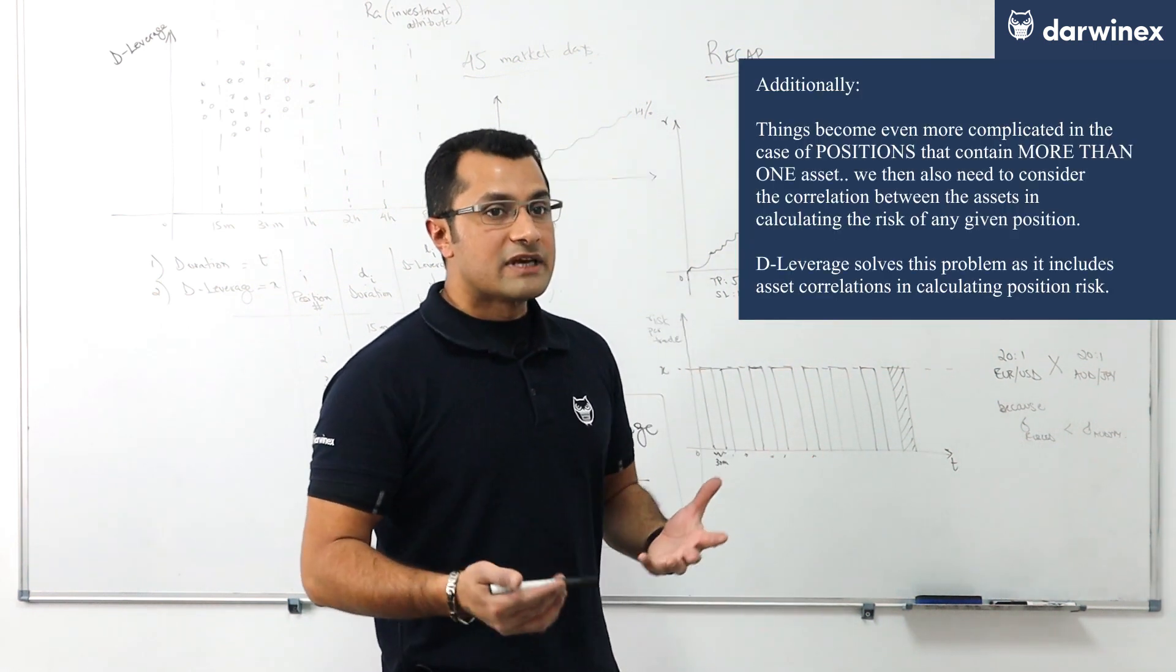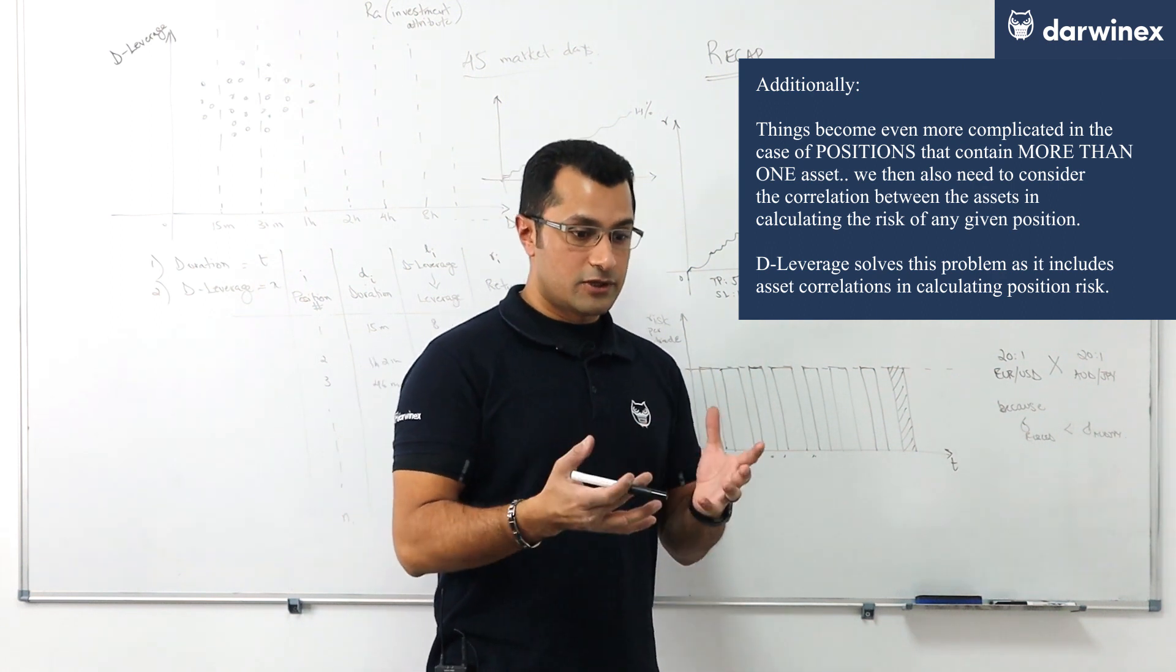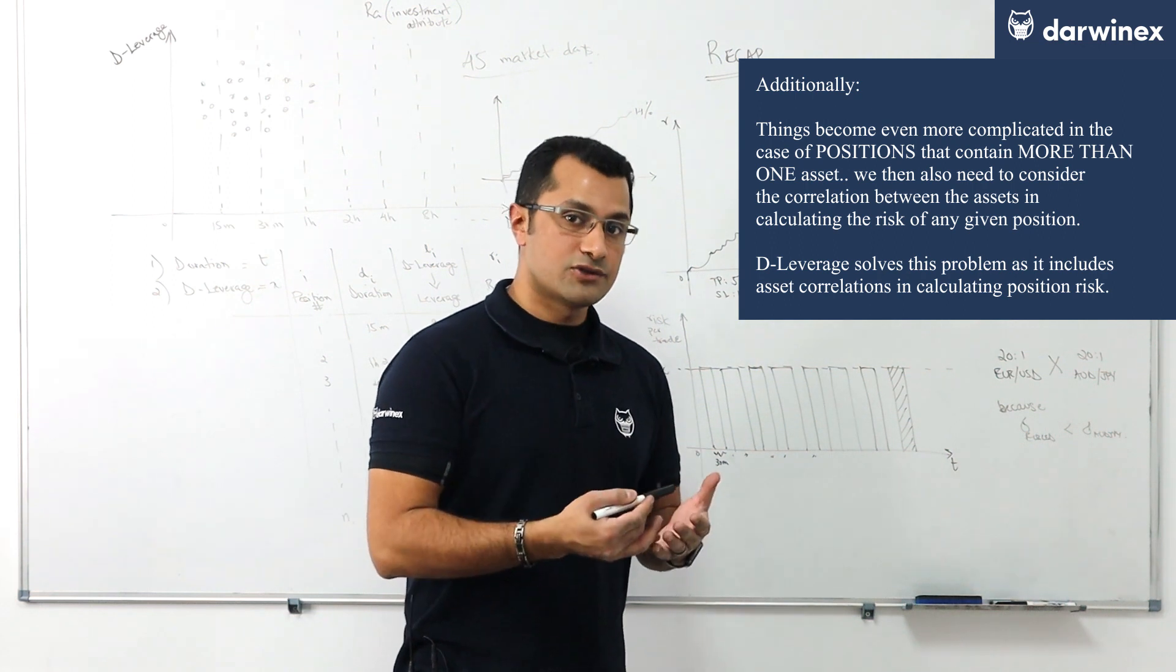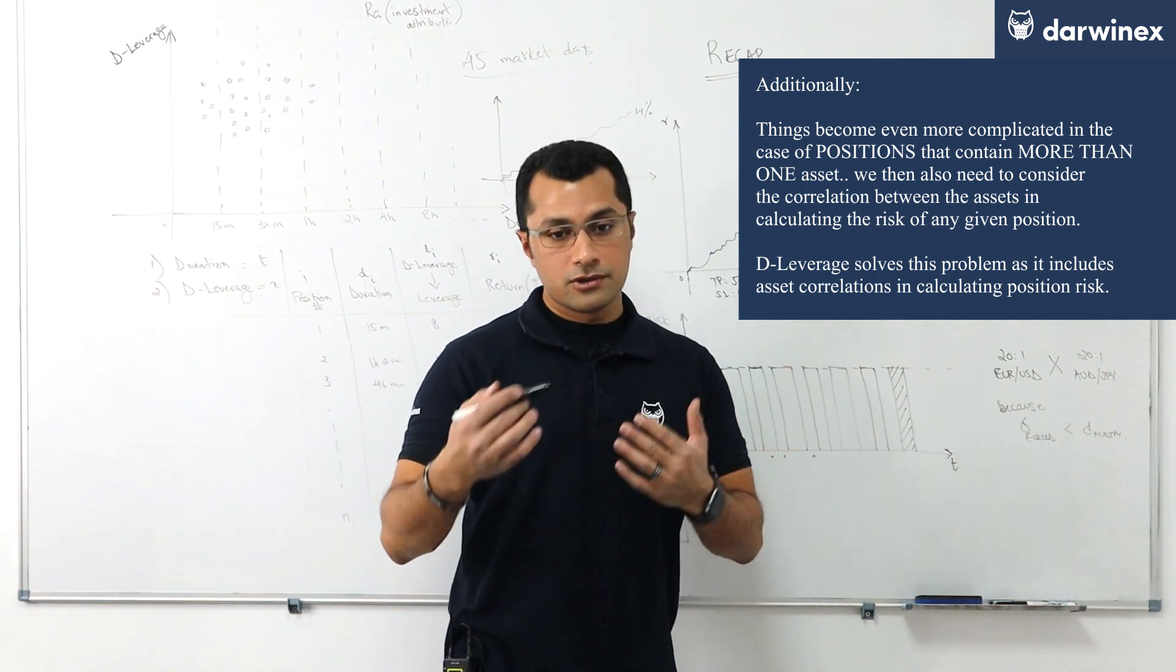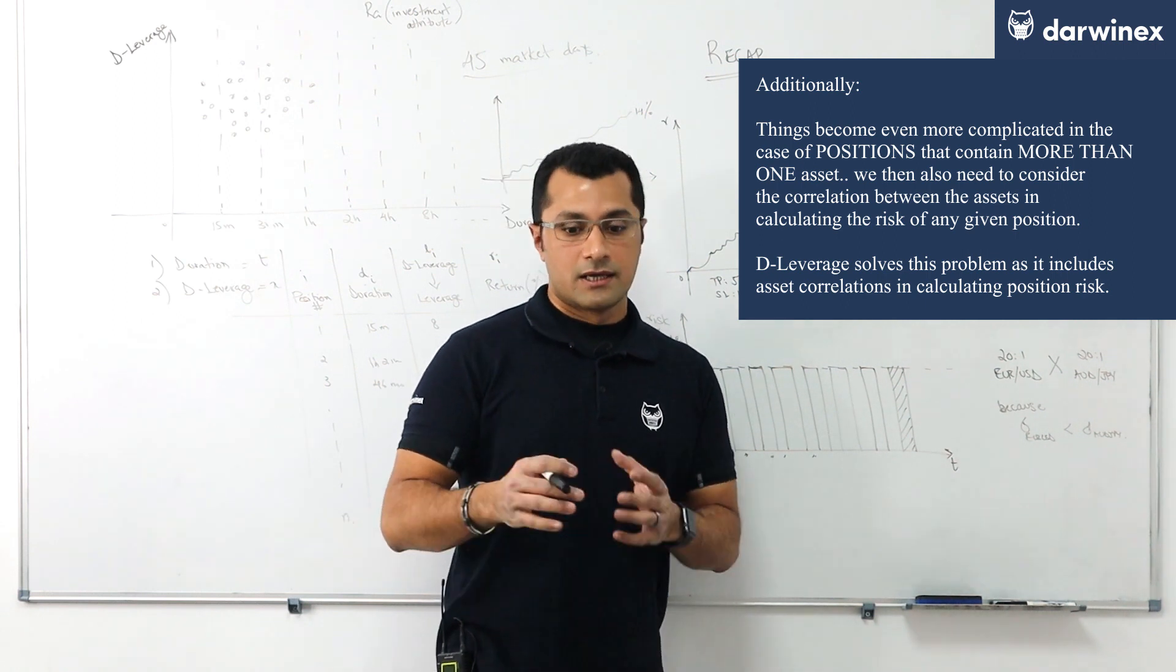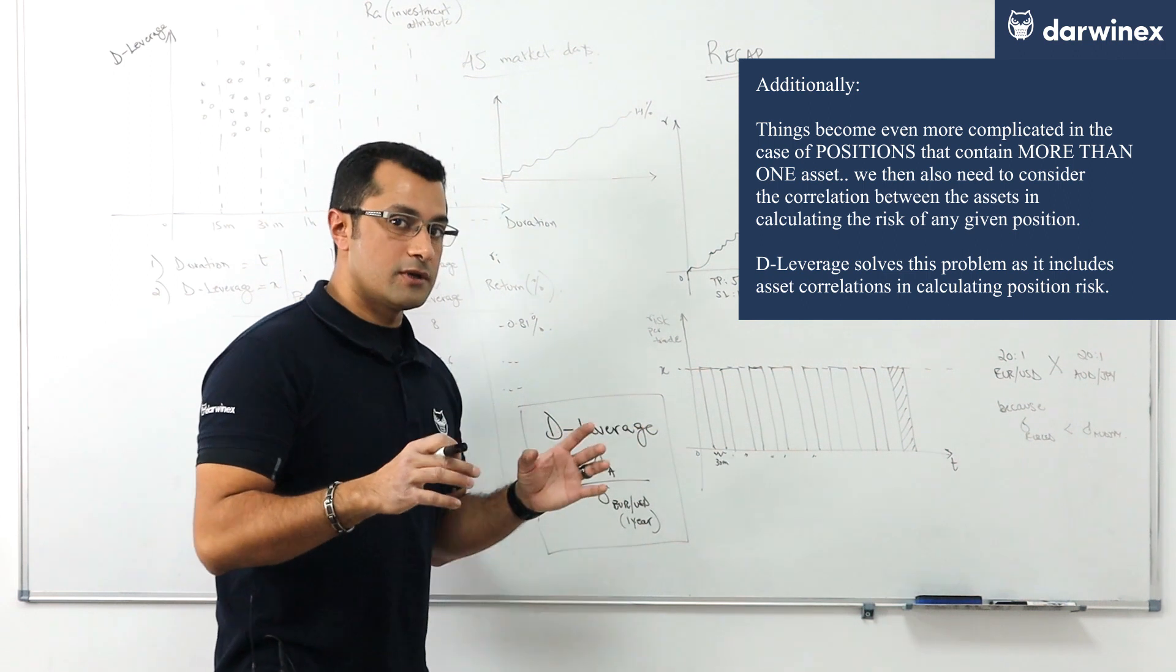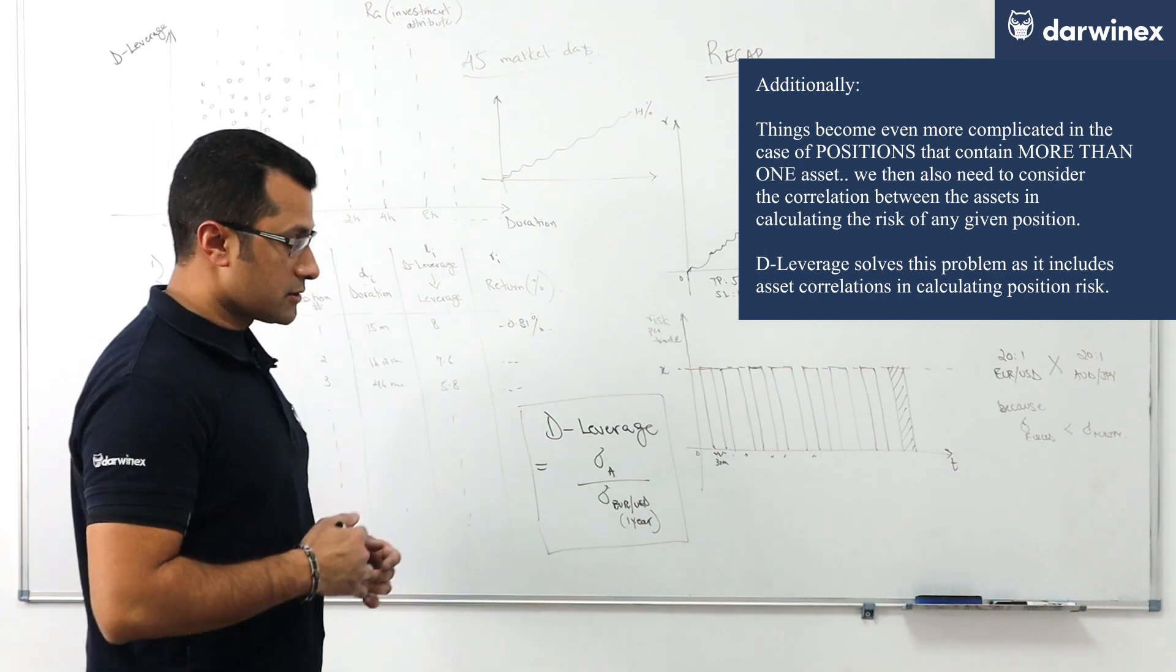So all of this motivated the need for us at DarwinX to engineer a metric that encapsulated all this information into one universal value whereby we could normalize the risk assumed by a trader on any given position against the risk that the trader could assume on a reference asset that we chose as the euro dollar over the course of the last one year worth of euro dollar data when evaluating the deleverage of any given position from that position.